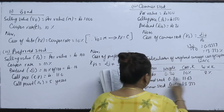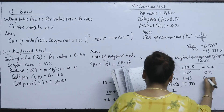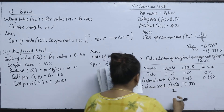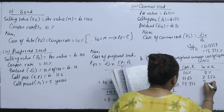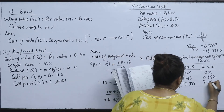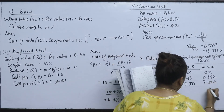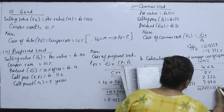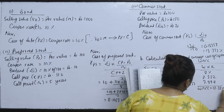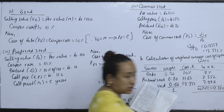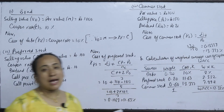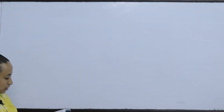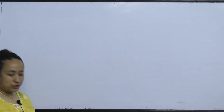Calculating WACC: 0.20 into 10% plus 0.20 into 11.63 plus 0.60 into 13.33 = 2.0 + 2.322 + 7.998. So the WACC is 12.32%.